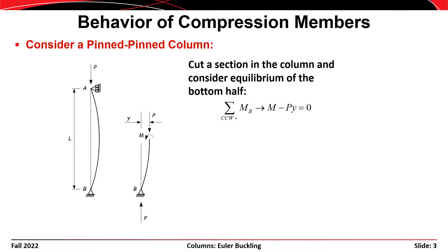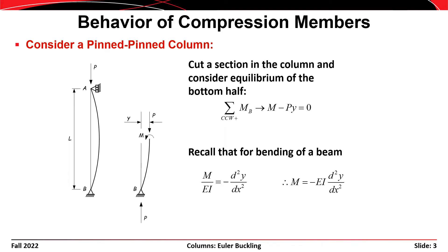We'll start by considering a pin-to-pin column, which serves as a baseline or default case when we consider compression members. We'll look at a column that has just started to buckle — it was initially straight, and as we apply a load P it starts to buckle. The shape of the buckle mode is typically assumed to be a half sine wave. If we cut a section somewhere between A and B, we can take equilibrium and see that the moment on the cross section M is equal to P times y.